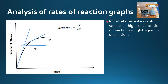When we plot the gradient and the rate of reaction, we can see that the initial rate is fastest — that's where the graph is the steepest, at the start. The reason for this is we have a high concentration of reactants, which means we have a high frequency of collisions, which means a fast rate of reaction.